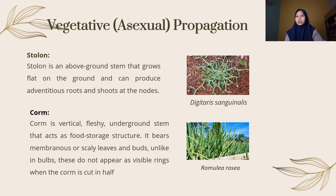A stolon is an above-ground stem that grows flat on the ground and can produce adventitious roots and shoots at the nodes. An example is Digitaria sanguinalis.